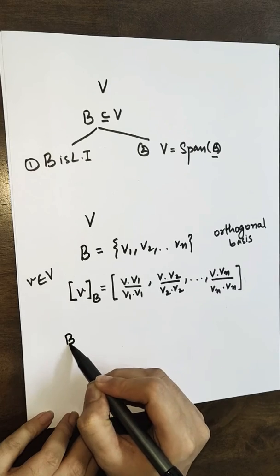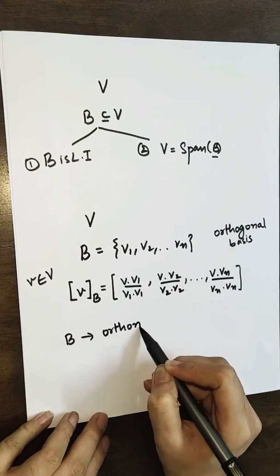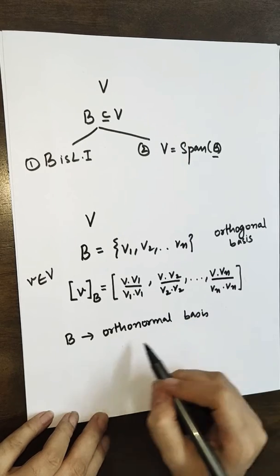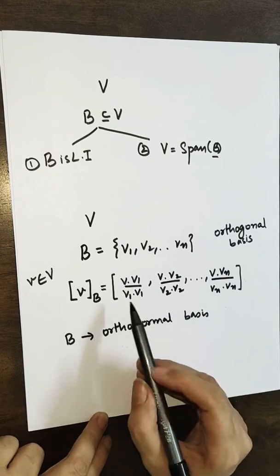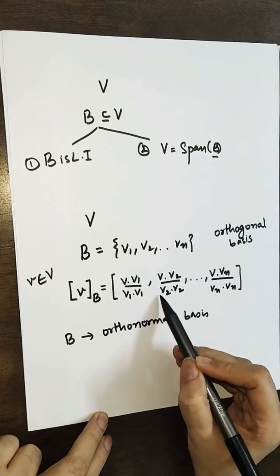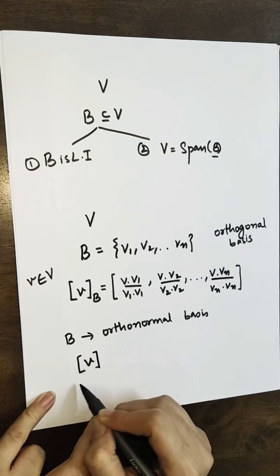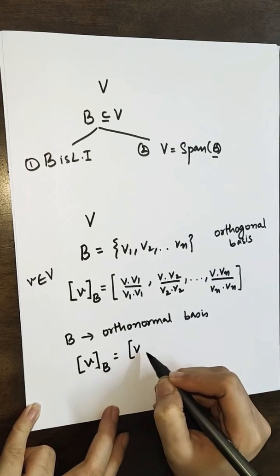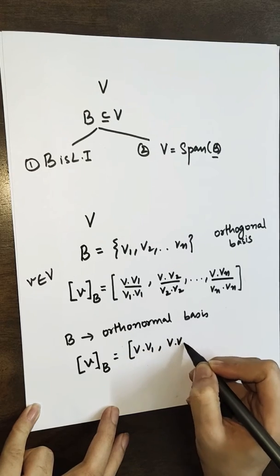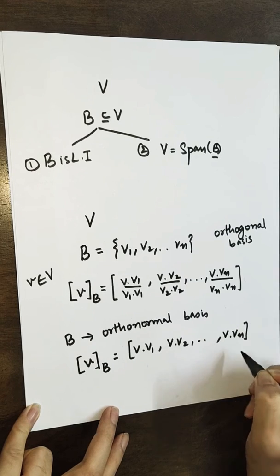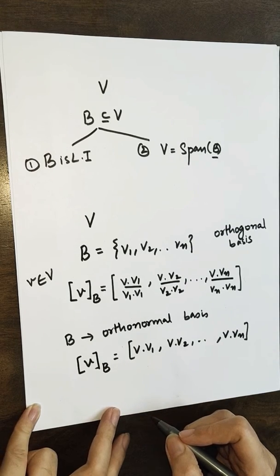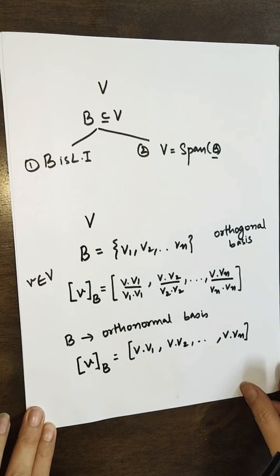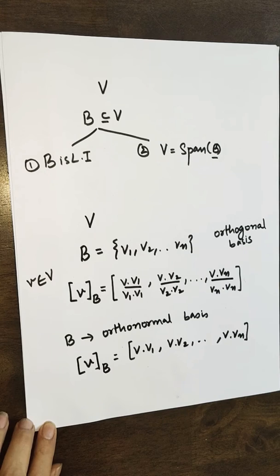Now if B is orthonormal, then in an orthonormal basis v1 dot v1 equals 1, so all those denominators become 1. Therefore, the coordinates of any vector v belonging to V with respect to an orthonormal basis are simply v·v1, v·v2, ..., v·vn. Please note that since we are talking about coordinates with respect to a basis, we take an ordered basis, where the order of the vectors is fixed.